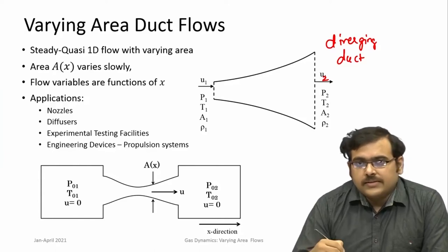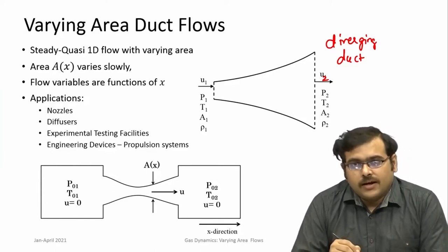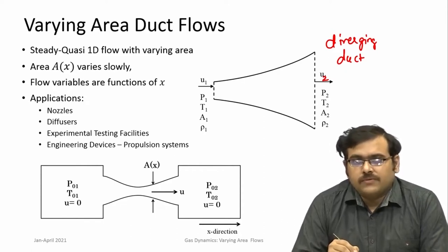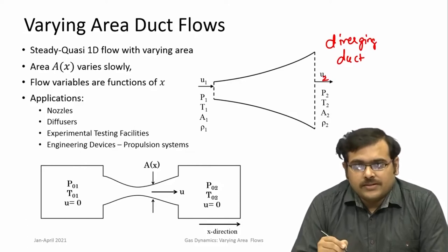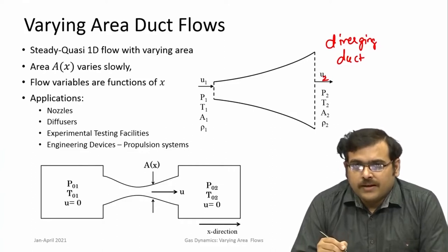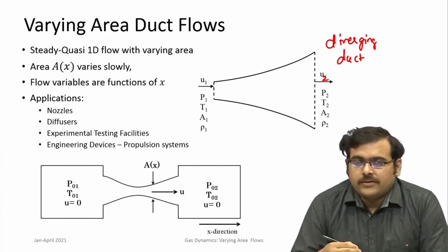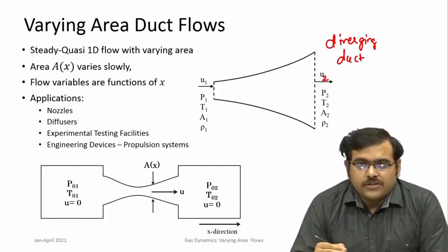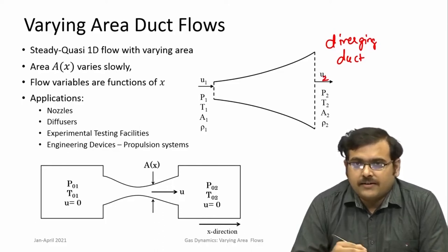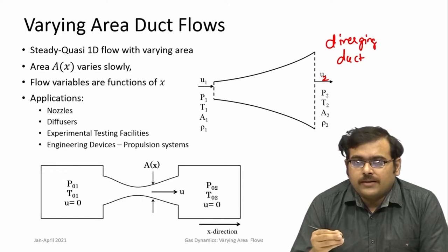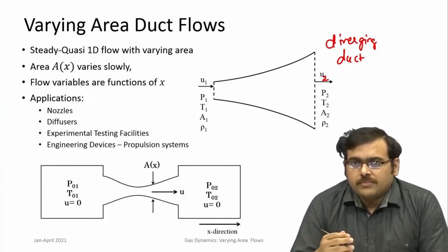The analysis done here, though we use the quasi-1D assumption, is a very good representation of the flows that actually take place in nozzles. Certain three-dimensional effects or losses are always present; in engineering systems they are accounted for using a loss coefficient or an efficiency factor, but we will take ideal flows. The main understanding we have to get is how compressible flow behaves as it goes through varying areas.